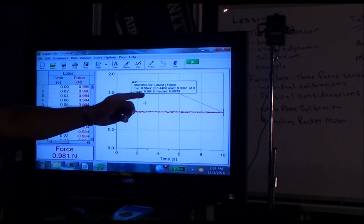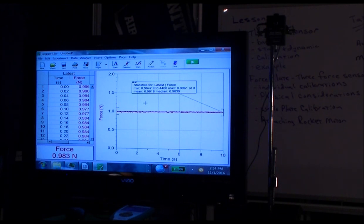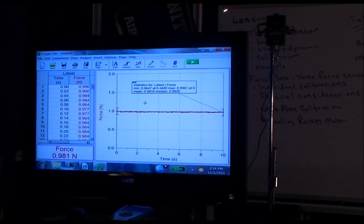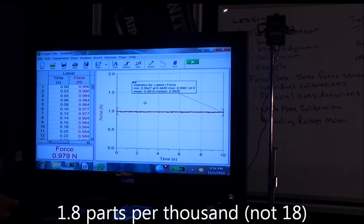And the mean is 0.9818. So if our expectation was exactly 0.98, then our error is about 18 parts in 1,000.